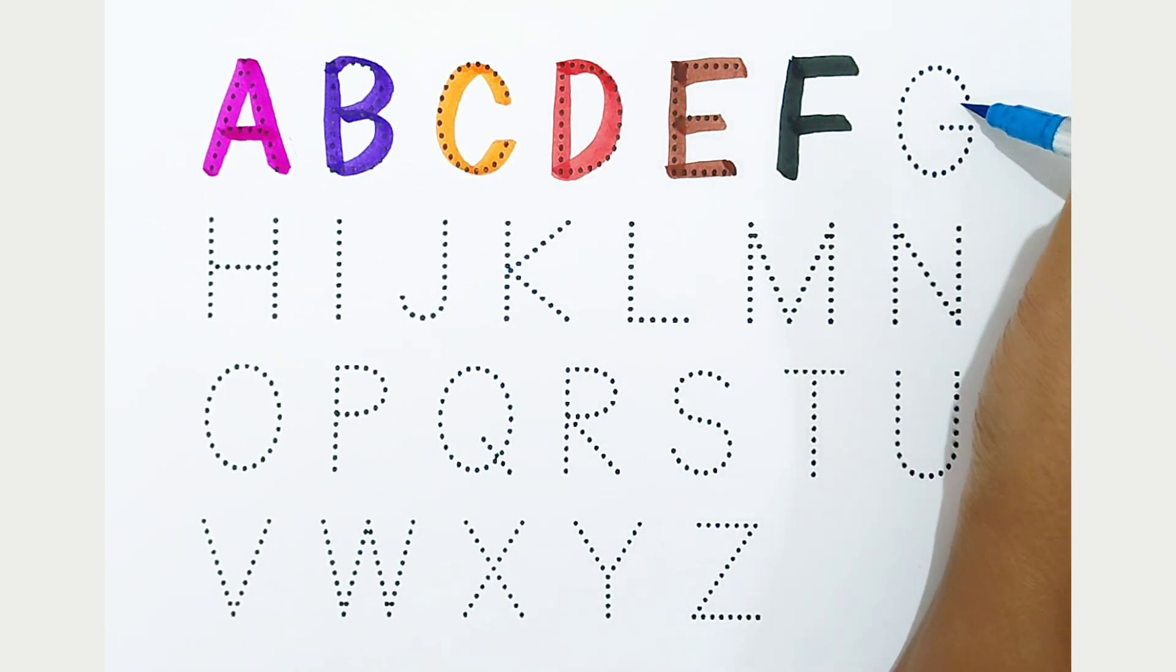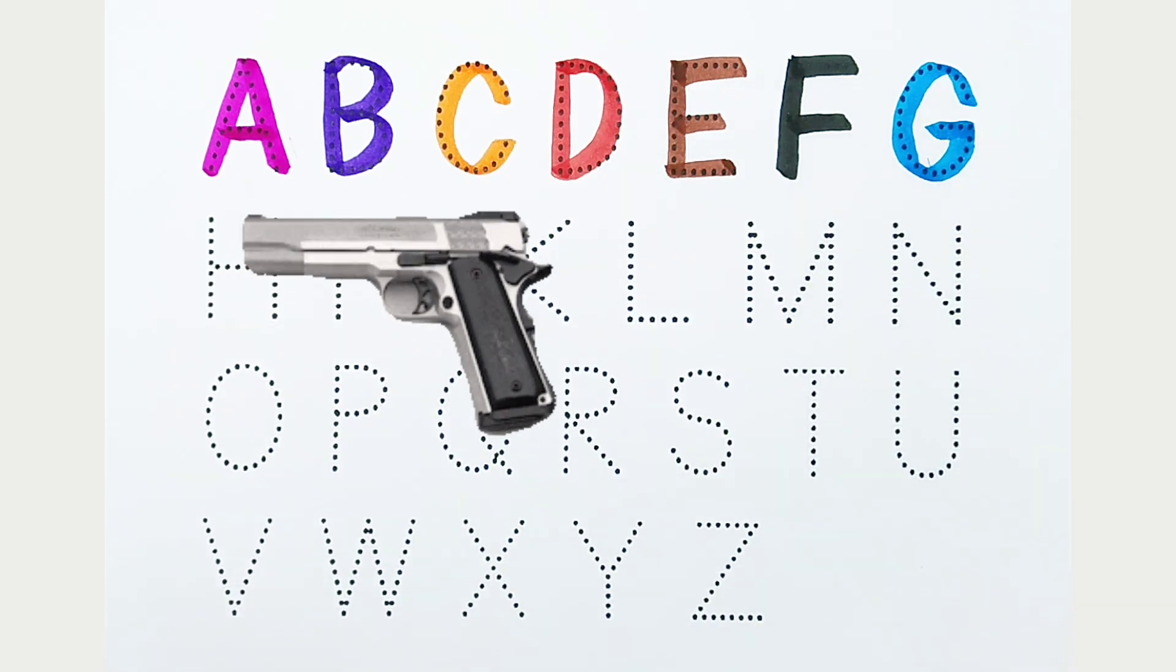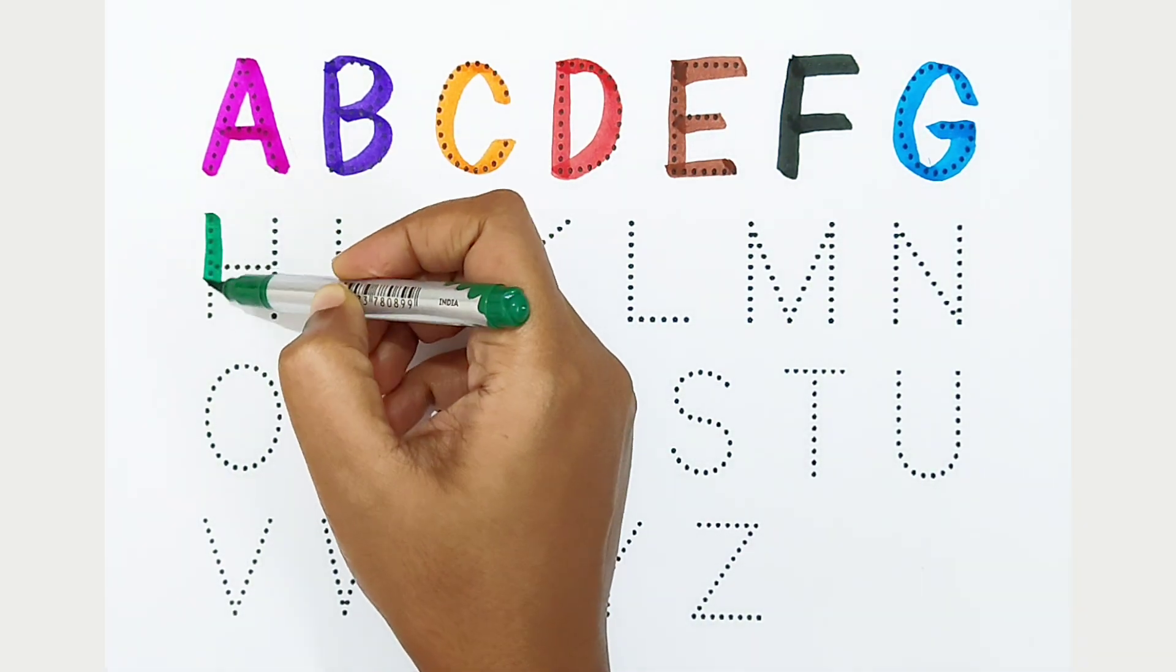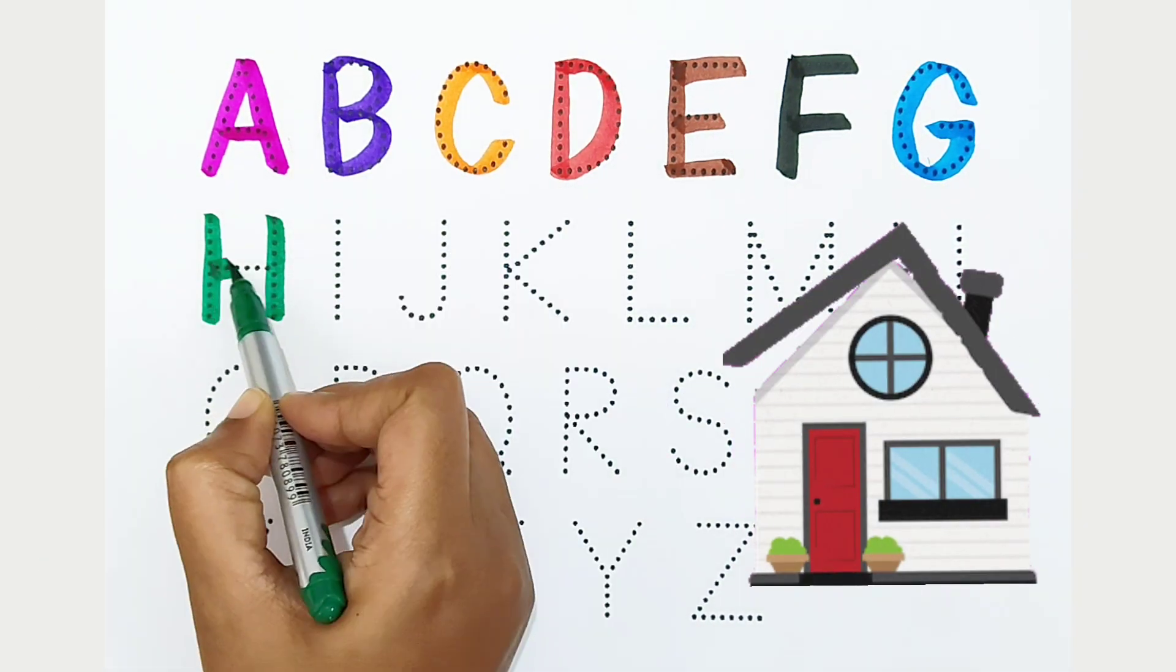G: light blue color. G is for gun. H: dark green color. H is for home.